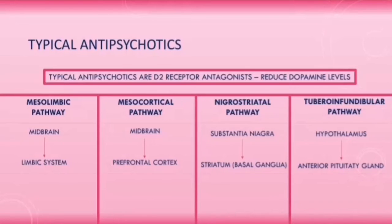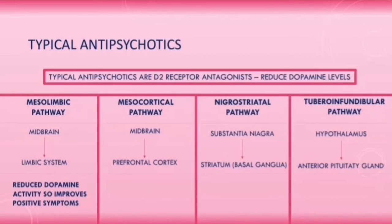Since overactivity in the mesolimbic pathway leads to the positive symptoms in schizophrenia, typical antipsychotics will reduce dopamine activity in this pathway and hence improve the positive symptoms.